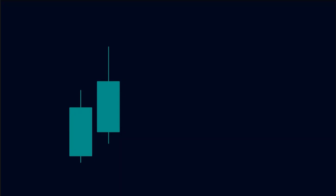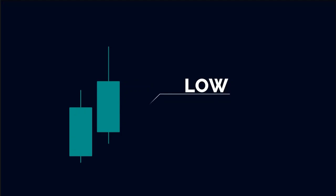In other words, the close is the average price of the current candle. The high of the Heiken Ashi candle is simply the highest price at which the asset has traded for that particular period of time. Similarly, the low of the Heiken Ashi candle is the lowest price at which the asset has traded for that particular period of time.